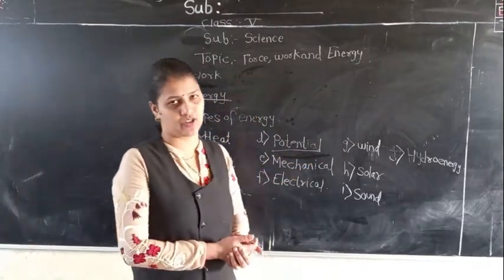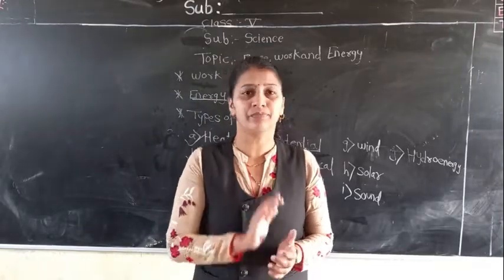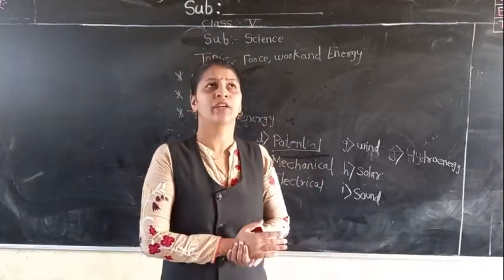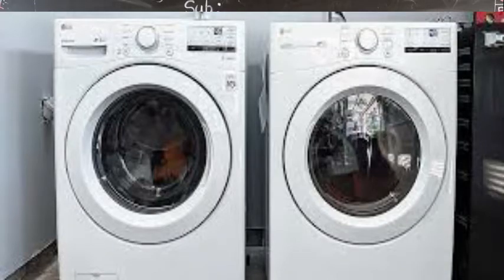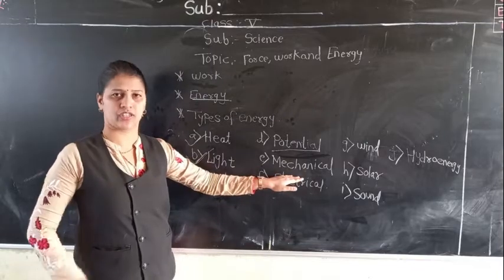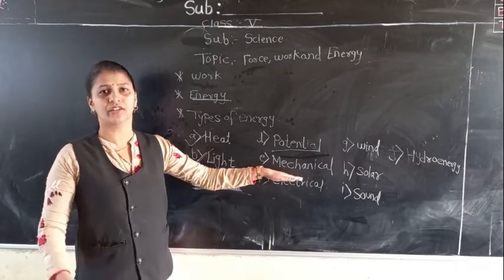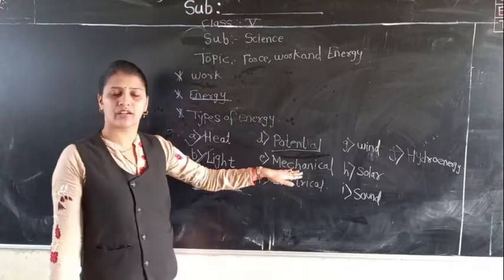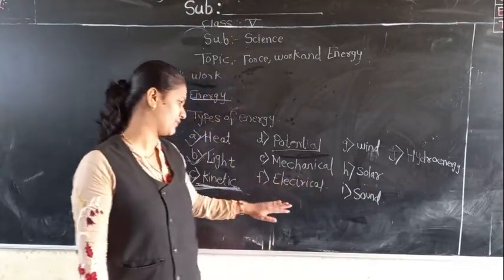Then the next is mechanical energy. Mechanical energy means — the fan, the mixer — they are working automatically. The machines are doing the work. These are some kind of machines. For example, you can take the example of fridge or mixer. The energy produced by the machine is called mechanical energy.